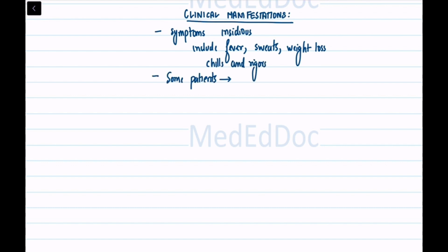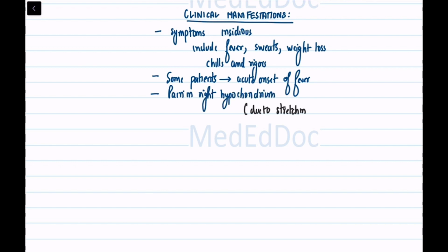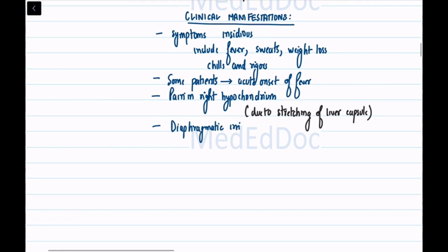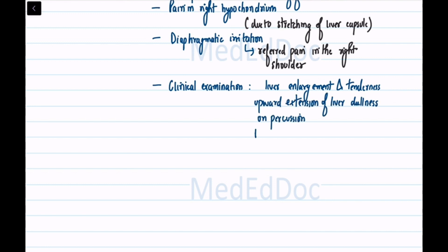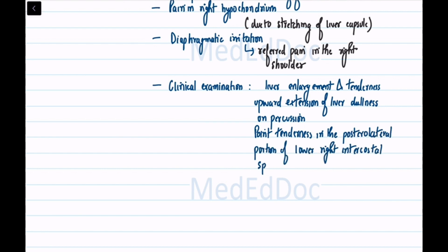Some patients may have an acute onset of fever. Pain in the right hypochondrium may occur due to stretching of the liver capsule, and diaphragmatic irritation can lead to referred pain in the right shoulder. Clinical examination may reveal liver enlargement and tenderness, upward extension of liver dullness on percussion, point tenderness in the posterolateral portion of a lower right intercostal space, and intercostal tenderness.